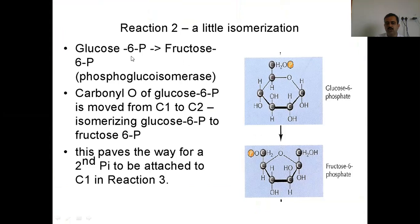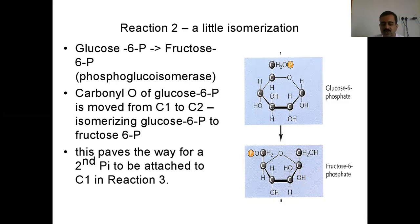Reaction 2: a little isomerization takes place. Glucose-6-phosphate is converted into fructose-6-phosphate with the help of the enzyme phosphoglucose isomerase. The carbonyl group of glucose-6-phosphate is removed from C1 and C2, isomerizing glucose-6-phosphate to fructose-6-phosphate. This paves the pathway for a second phosphate to be attached at C1 in reaction 3. This process involves small structural changes — isomerization — in this particular reaction.